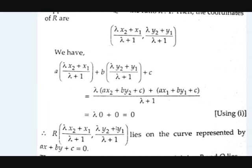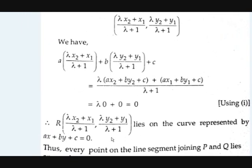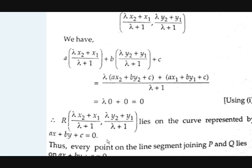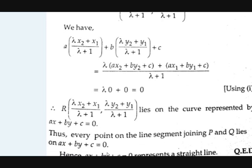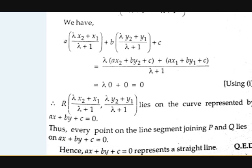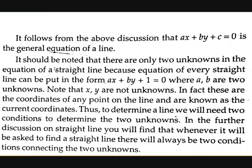Therefore, the coordinates (λx2 + x1)/(λ+1) and (λy2 + y1)/(λ+1) lie on the curve represented by Ax + By + C = 0. Since lambda can be varying, every point on the line segment joining P and Q lies on Ax + By + C = 0. So Ax + By + C represents a straight line. From the above discussion, Ax + By + C = 0 is the general equation of a straight line.